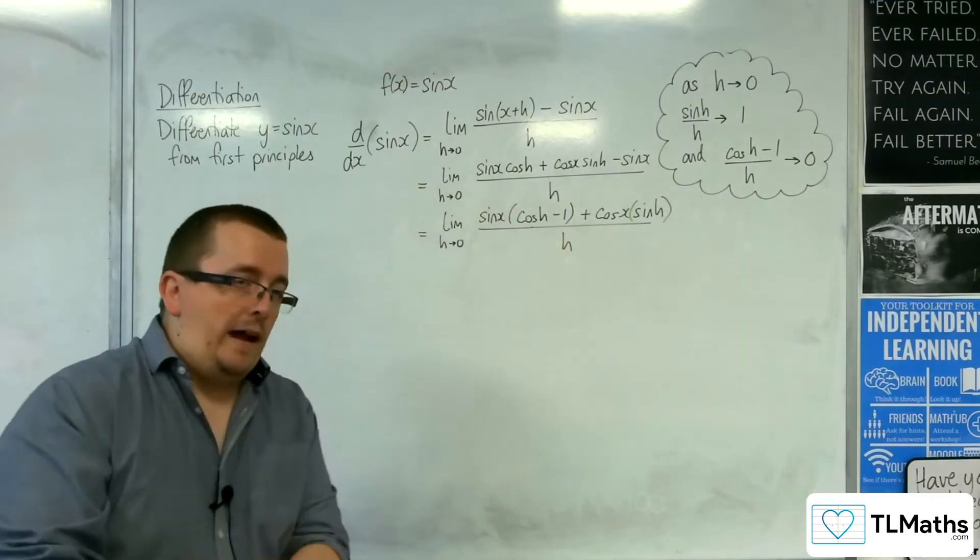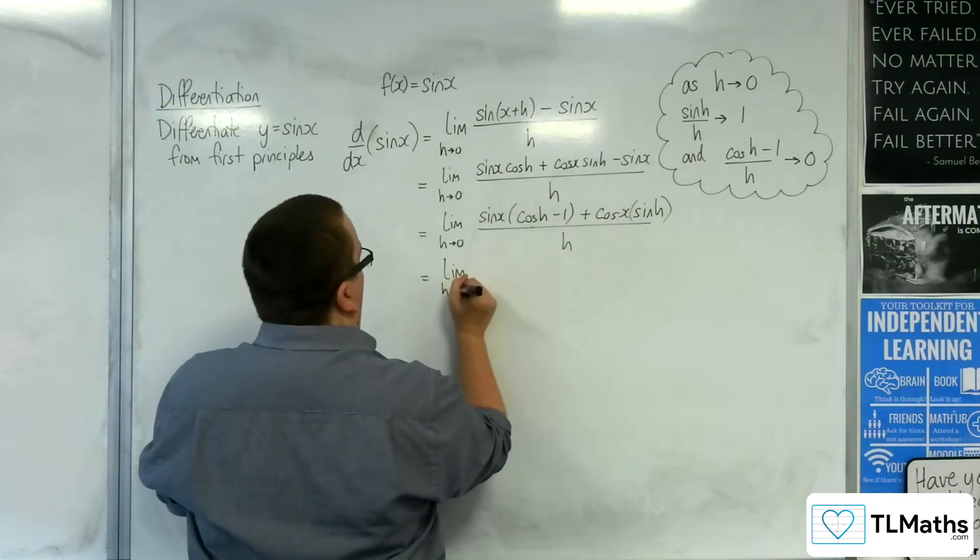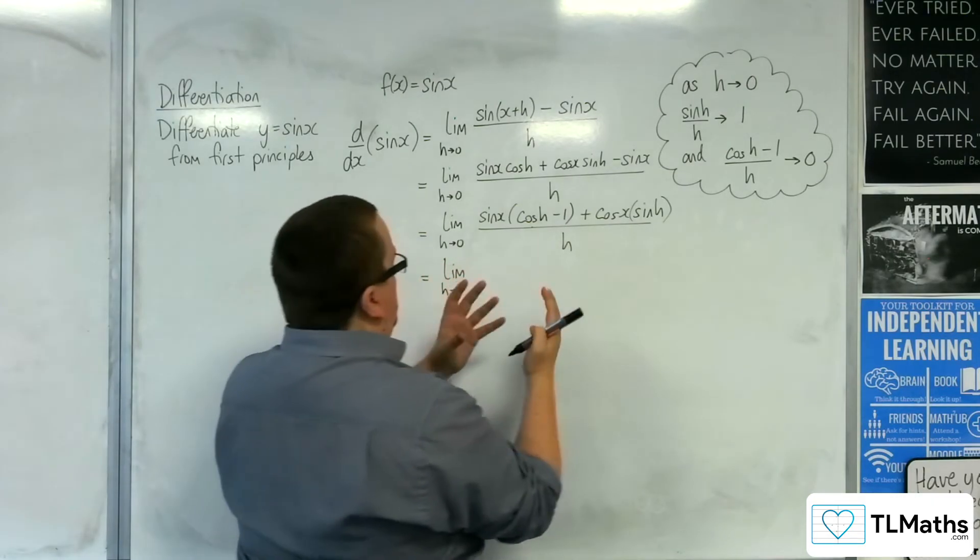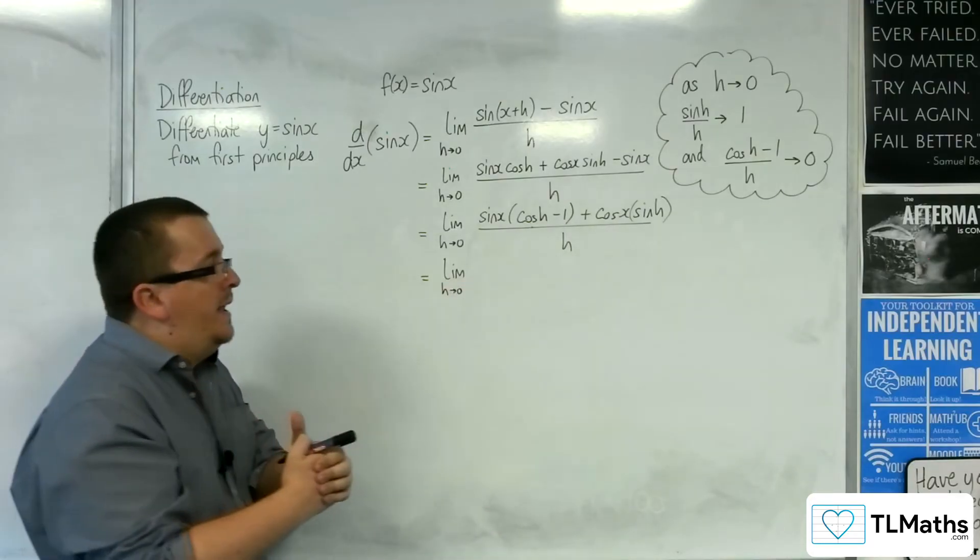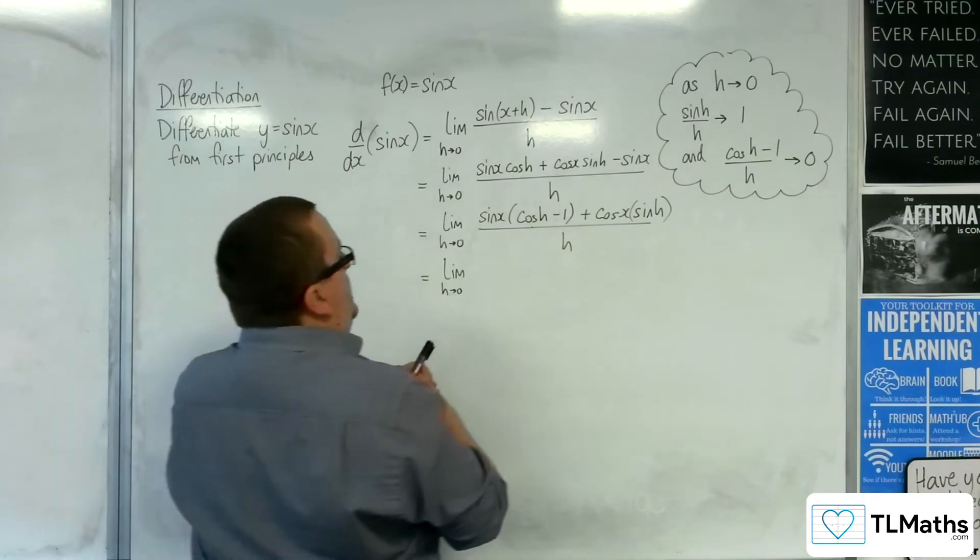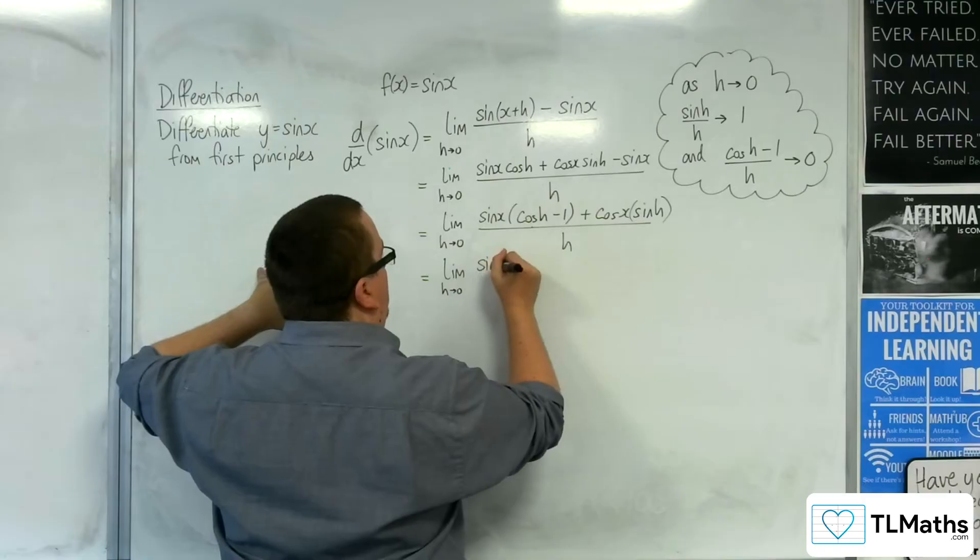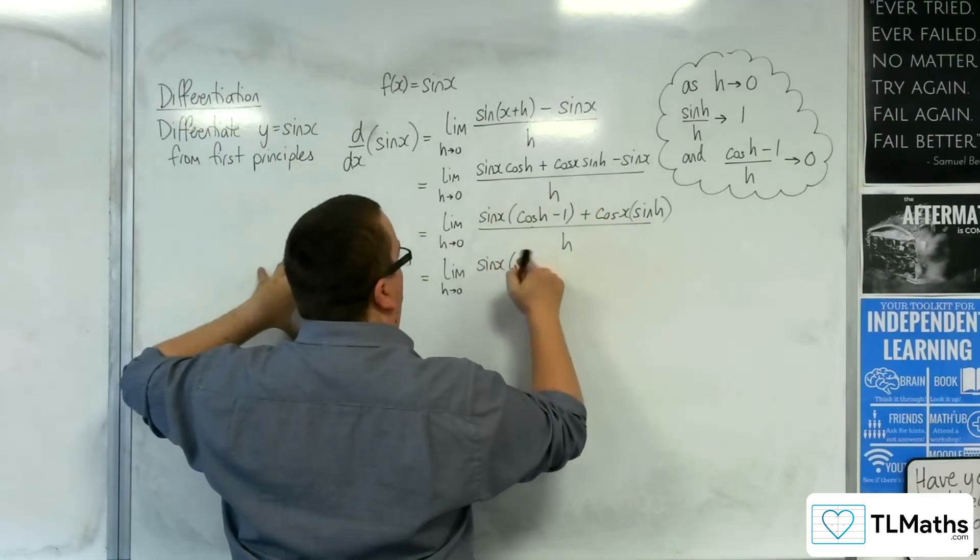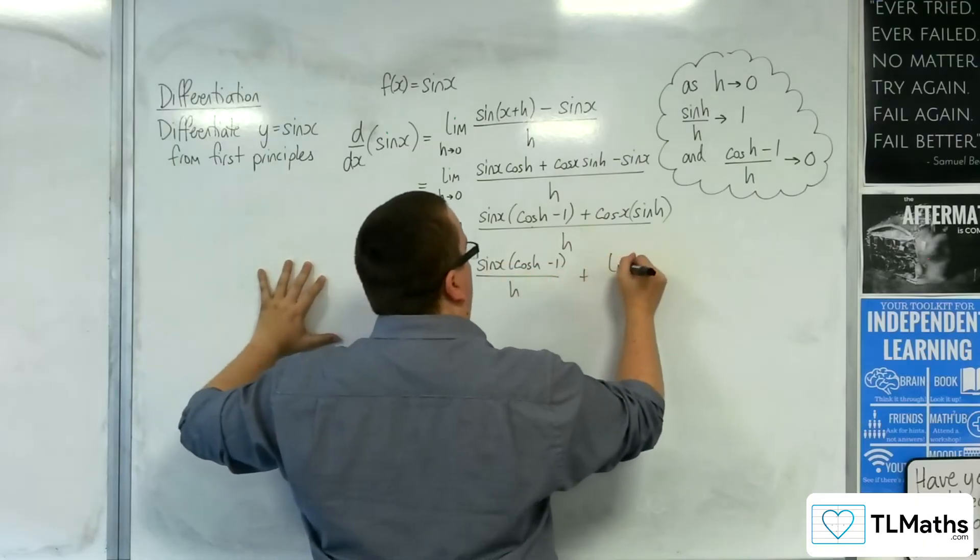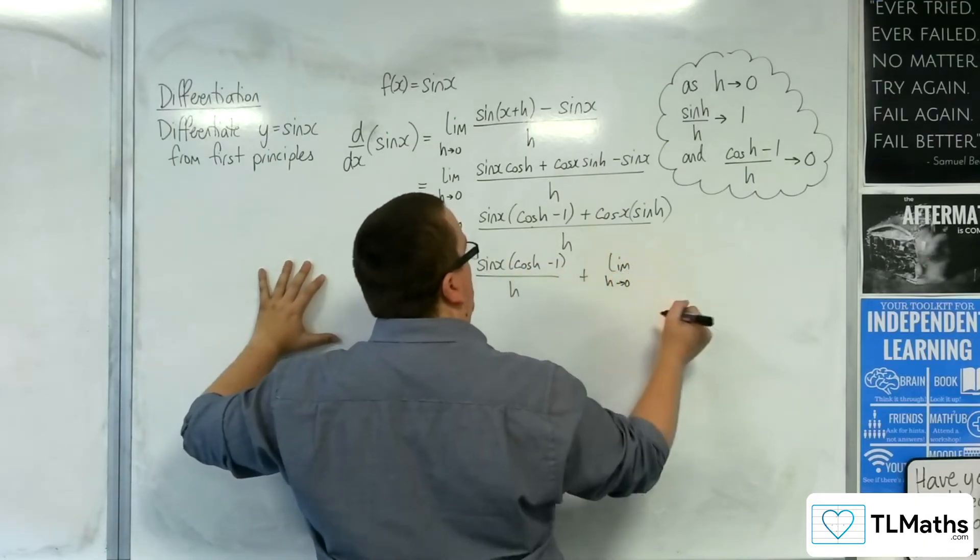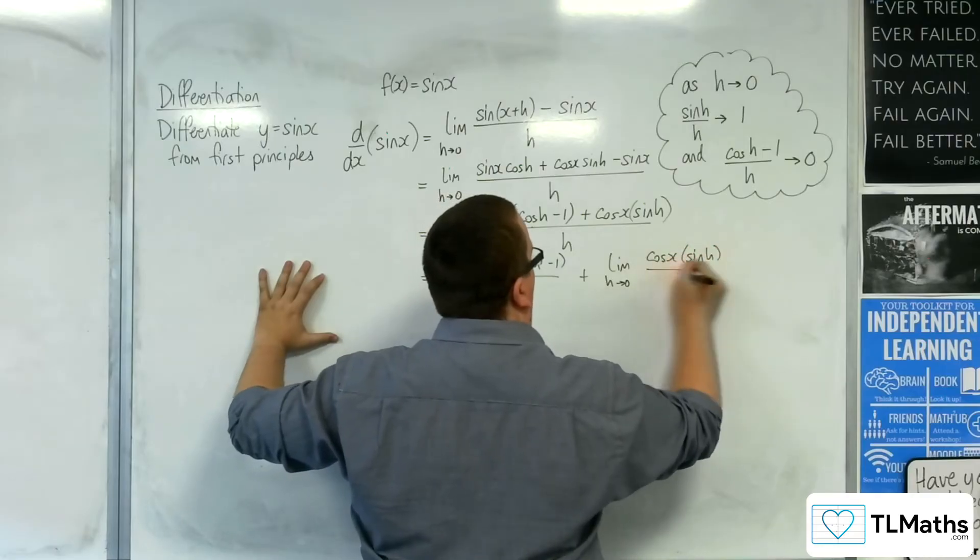What I'm going to do now is split this up into two limits. This is a perfectly valid move - I'm not going to prove it here, but you can look up a proof for it. So I can split this up into the limit of sine x times cosine h take away 1 over h, plus the limit as h tends to 0 of cosine x sine of h over h.